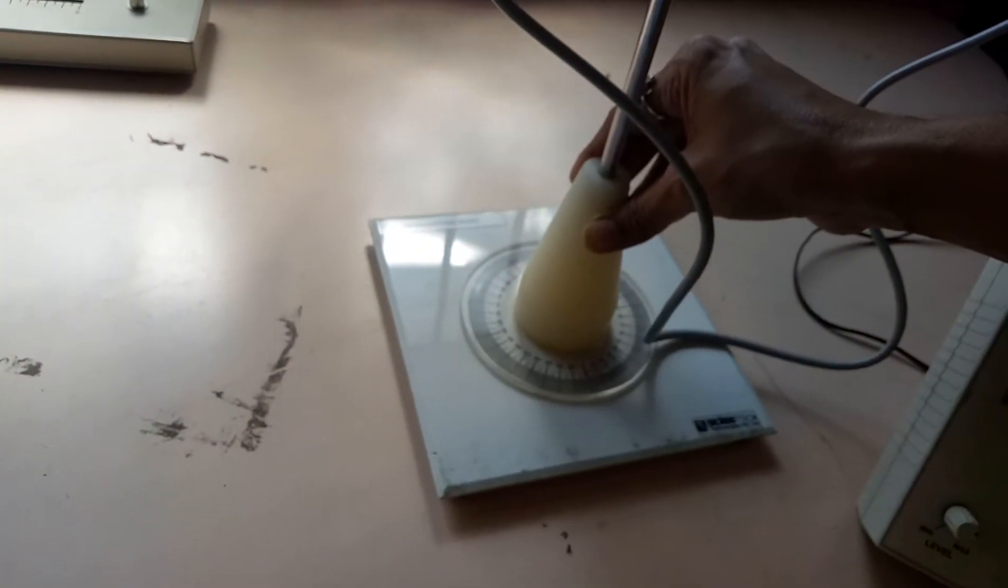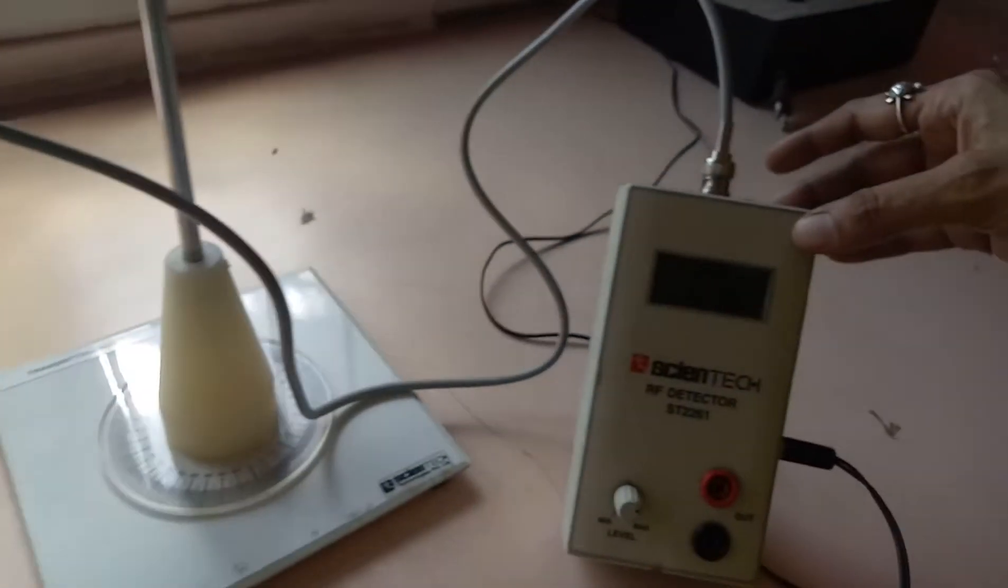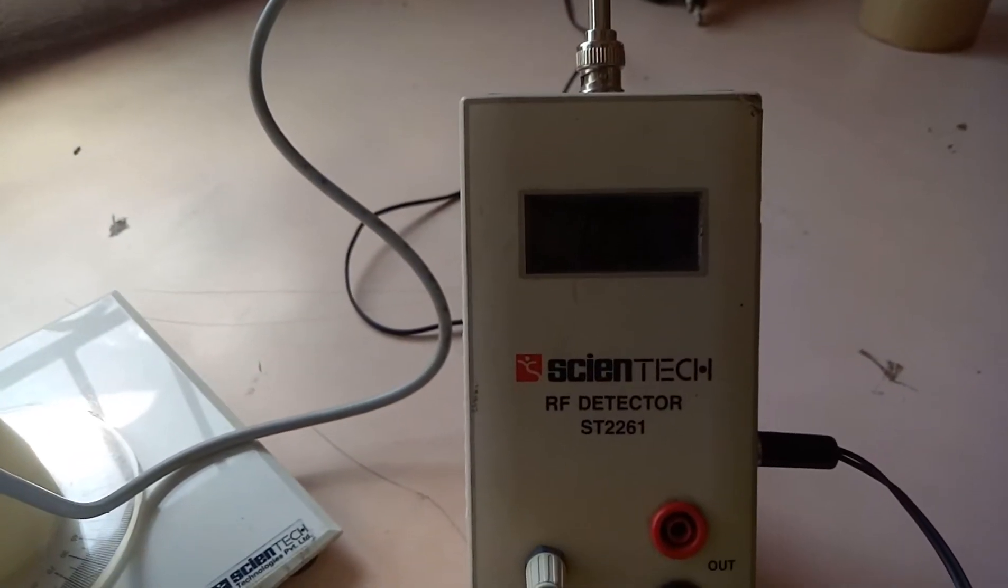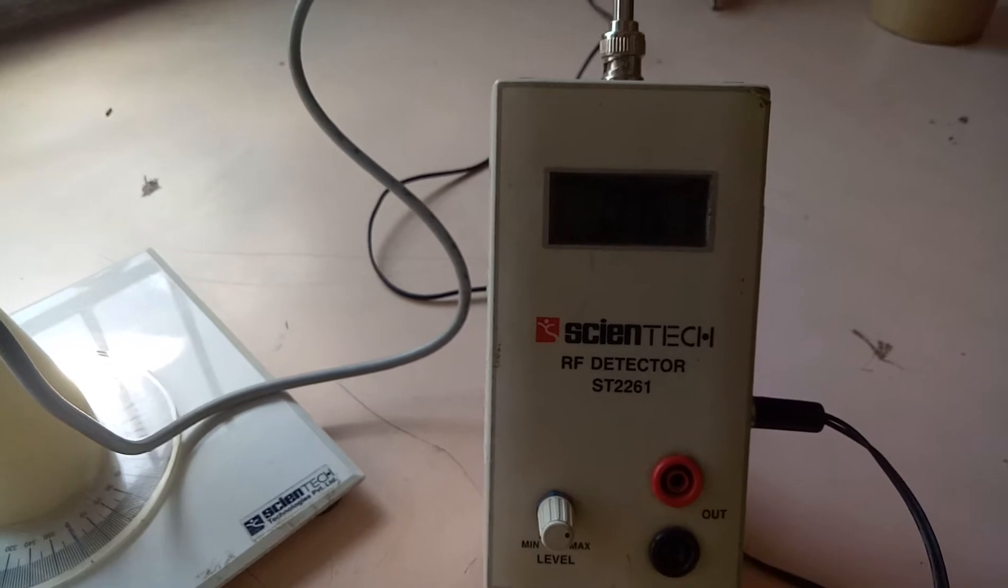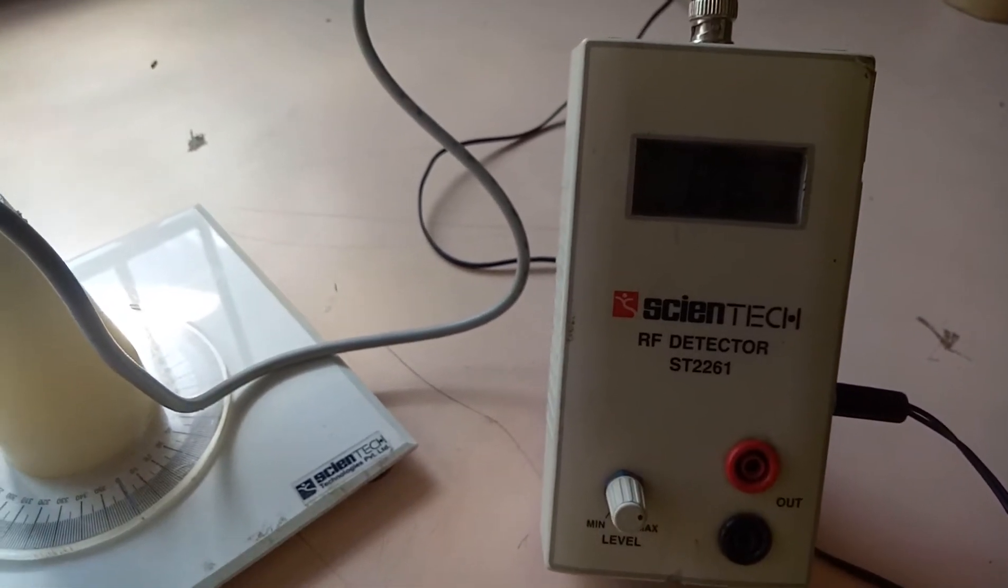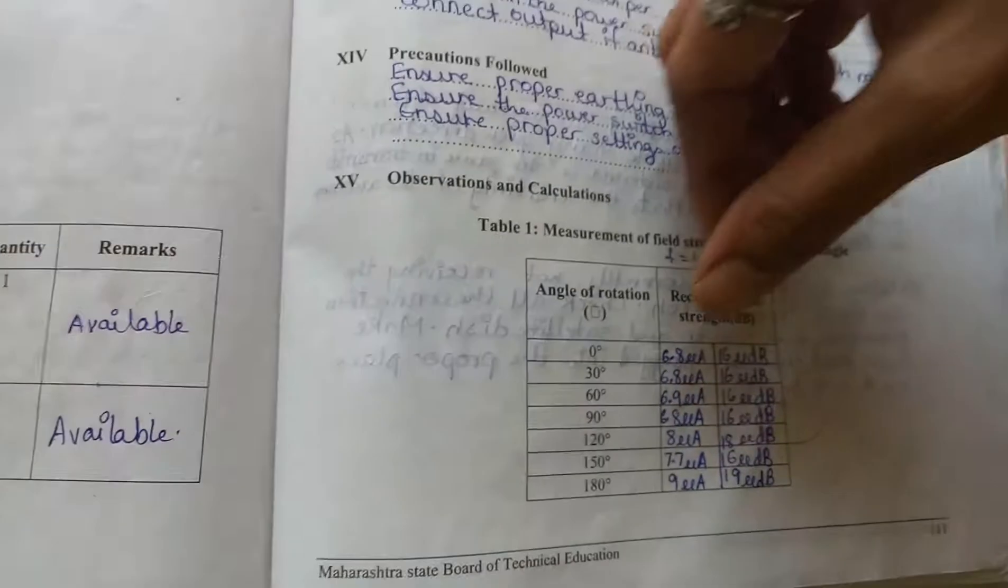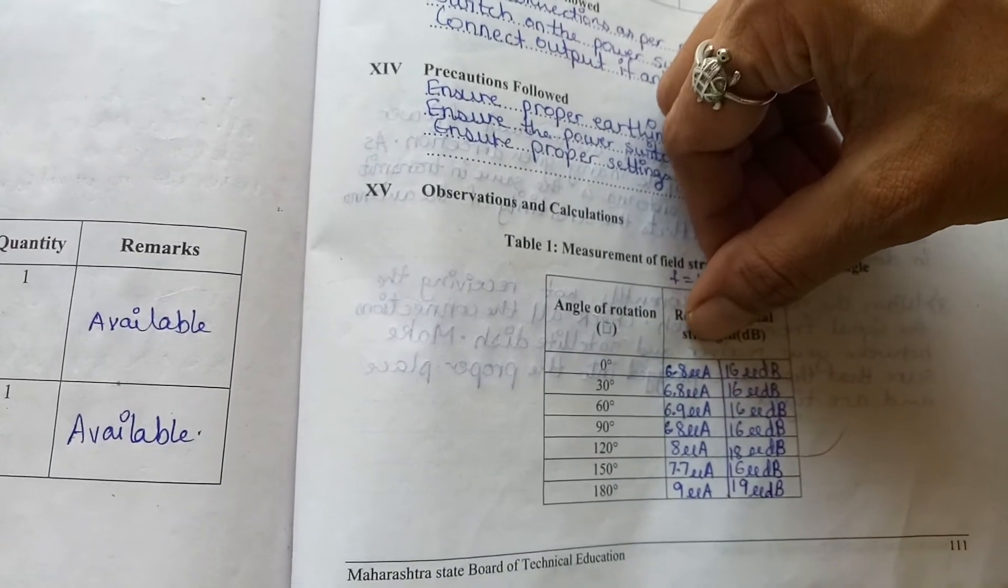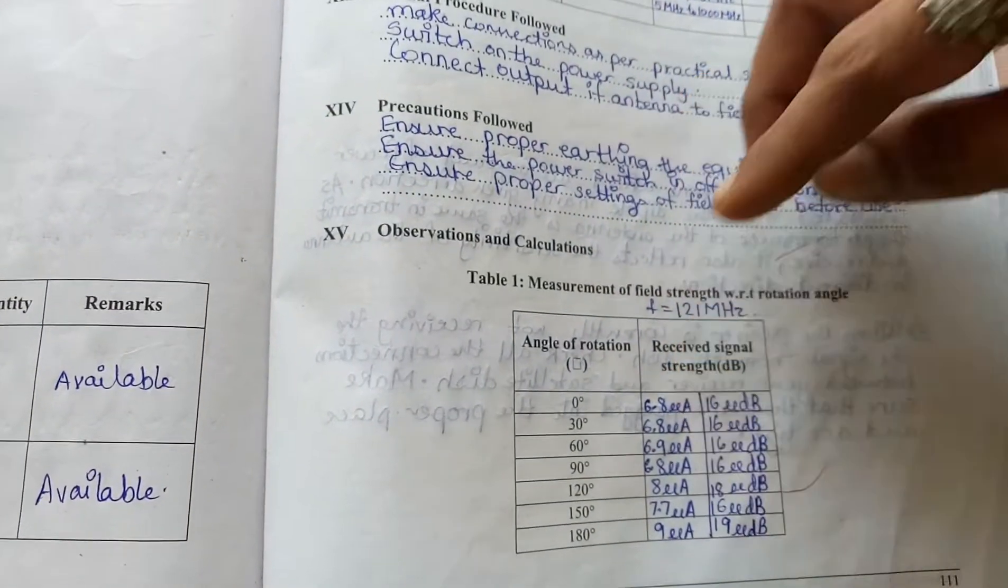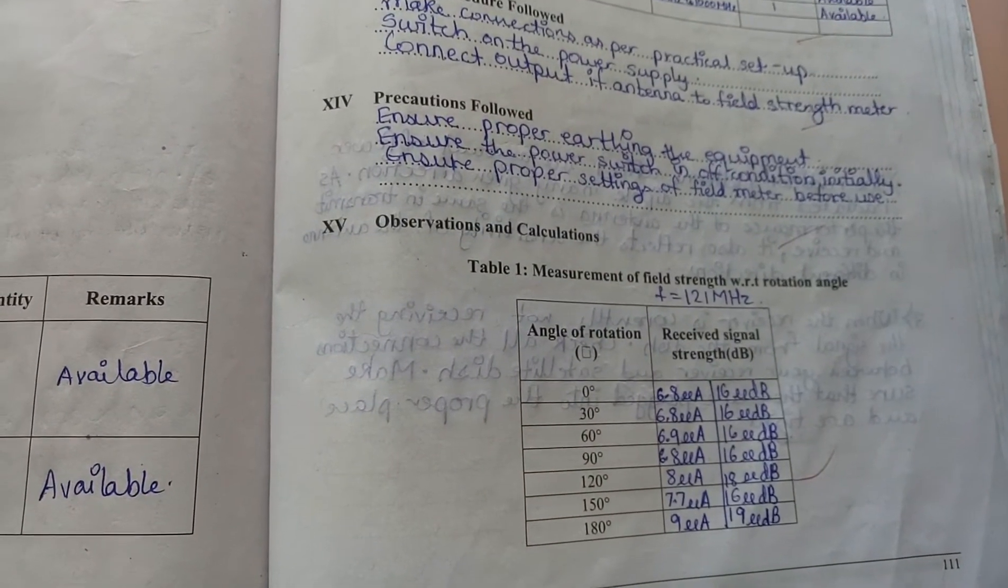The first angle is 0 degrees. Set here, now you measure the power. The power is 6.2. This power is converted into dB.